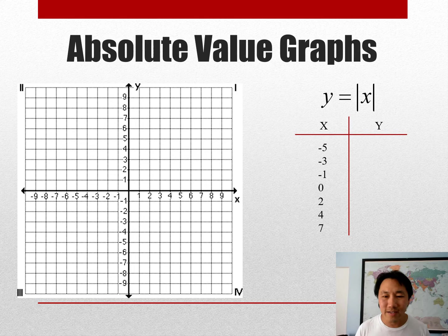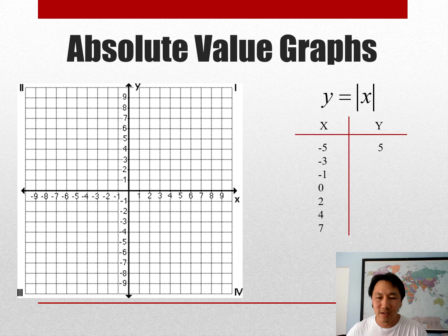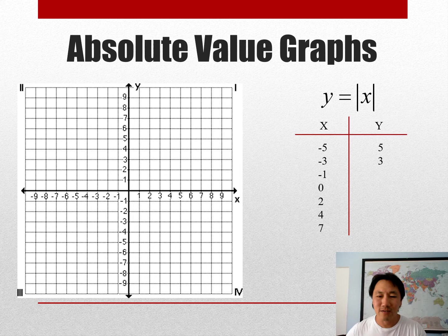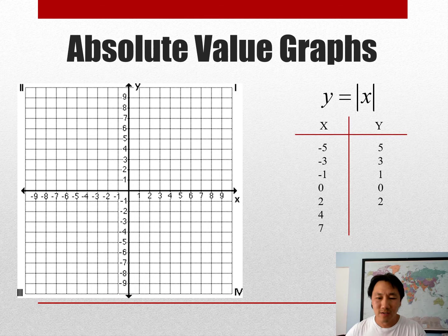All right, so if you plug in all of your x values into that function, if you plug in a negative 5, absolute value of negative 5 turns out to be positive 5. Plug in a negative 3, comes out positive. Plug in a negative 1, comes out positive. Plug in 0, still 0.